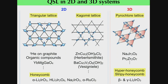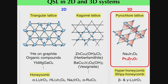The pyrochlore lattice is one of the three-dimensional, highly frustrated systems. I'd like to talk about this compound: pyrochlore Yb₂Ti₂O₇.